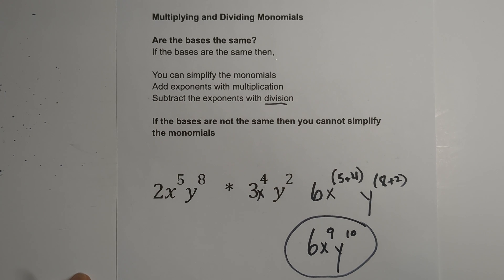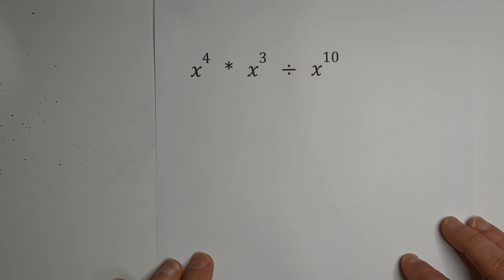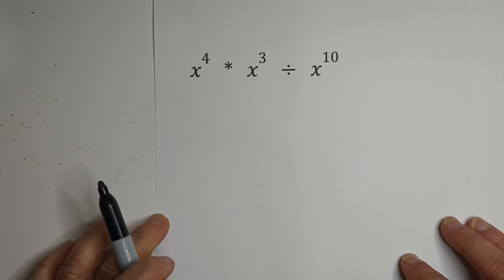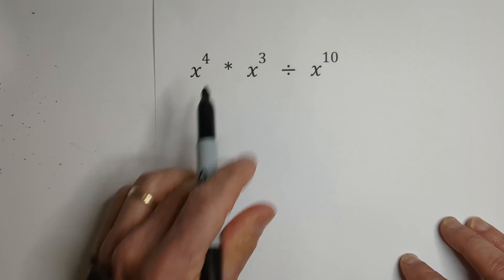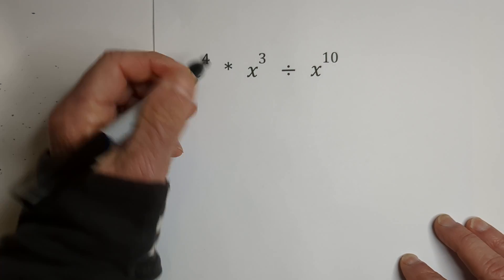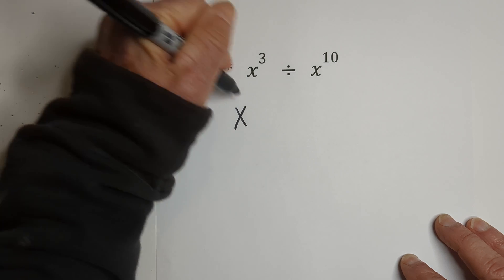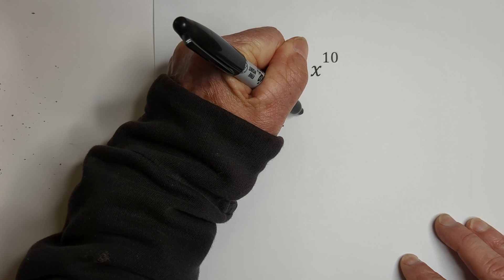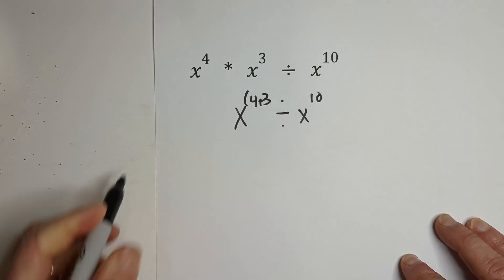Let's look at another example. With this example, all the bases are the same. So we can multiply and we can divide. And so we're going to apply both of the rules. So let's begin here. We have X and X. And then we have 4 plus 3. And then that's going to be divided by X to the 10th.